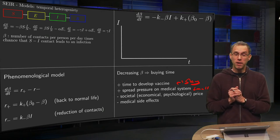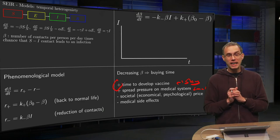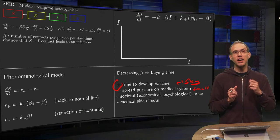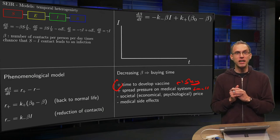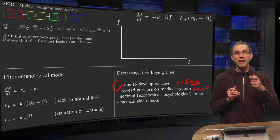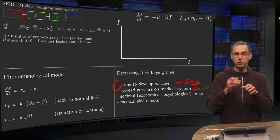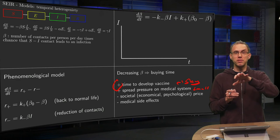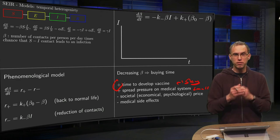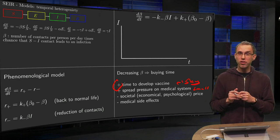Those are the pluses of buying time. What about the minuses? Decreasing beta is obviously a huge societal effect, a very steep price. Also, an expected side effect is that due to measures, you have negative medical side effects as well—people not going to the doctor, lots of missed cancer cases, and so on.